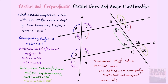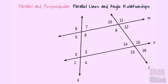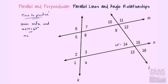Now let's practice implementing this with some numbers. We're looking at the same set of angles and the same parallel lines, with line m parallel to line n. We're given that the measurement of angle fourteen is 67 degrees, and the measurement of angle six is 105 degrees.